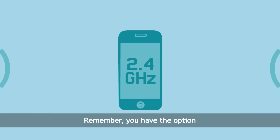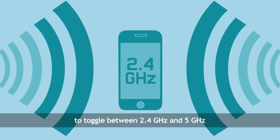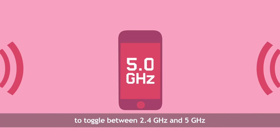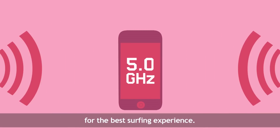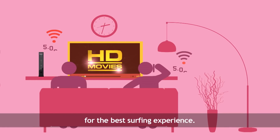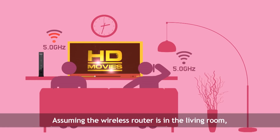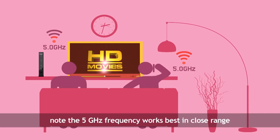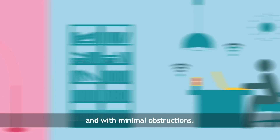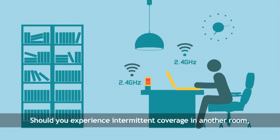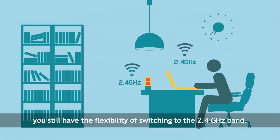Remember, you have the option to toggle between 2.4GHz and 5GHz for the best surfing experience. Assuming the wireless router is in the living room, note that the 5GHz frequency works best in close range and with minimal obstructions. Should you experience intermittent coverage in another room, you still have the flexibility of switching to the 2.4GHz band.